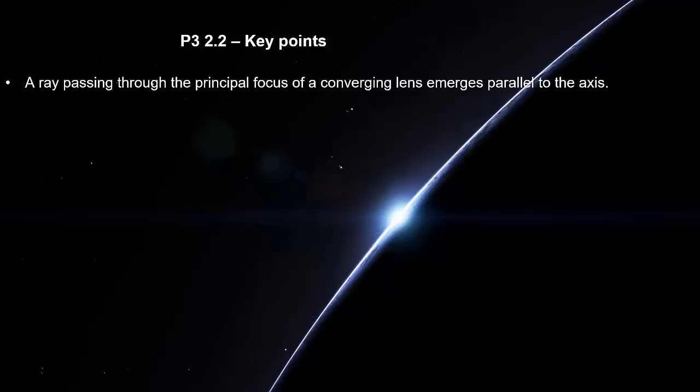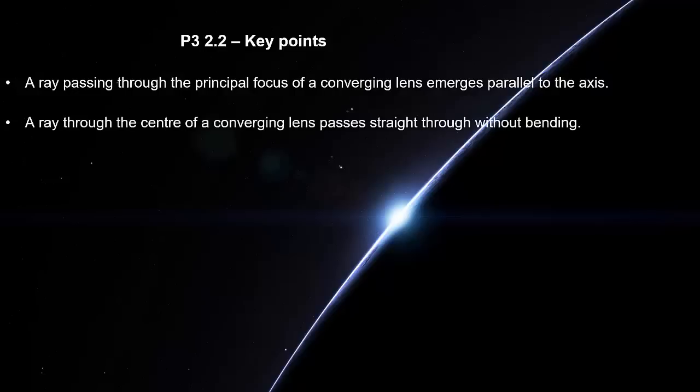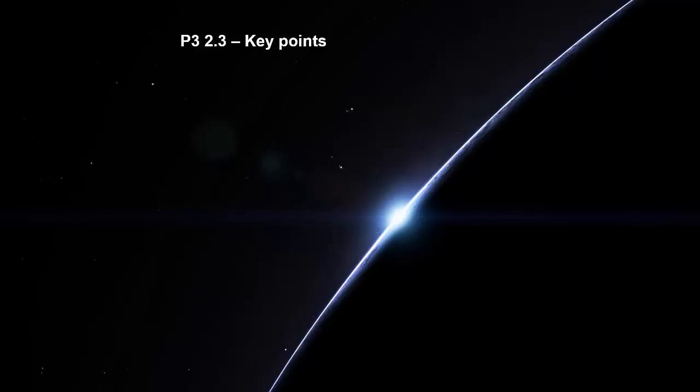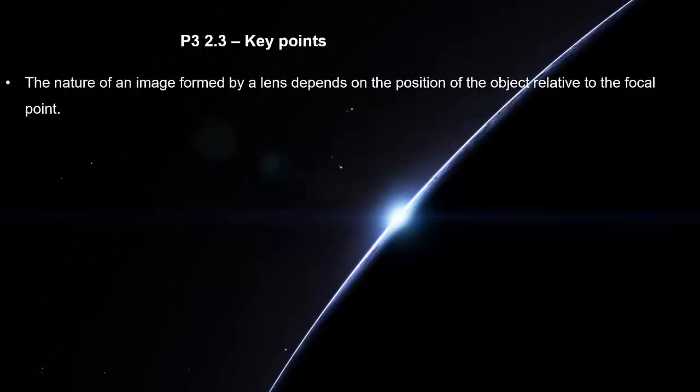A ray passing through the principal focus of a converging lens emerges parallel to the axis. A ray through the center of a converging lens passes straight through without bending. A converging lens acts as a magnifying glass when the object is closer than the focal length of the lens. The nature of an image formed by a lens depends on the position of the object relative to the focal point.